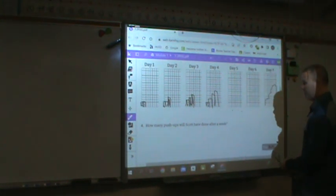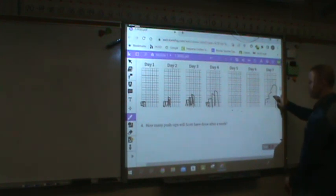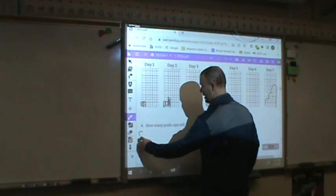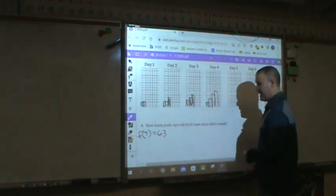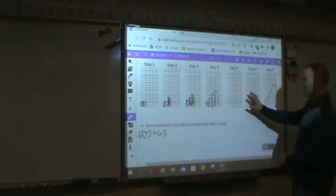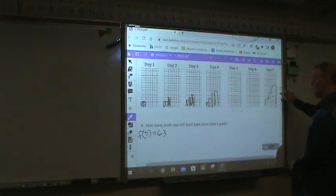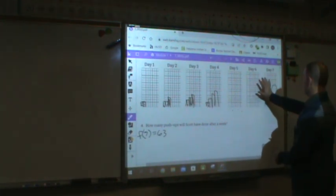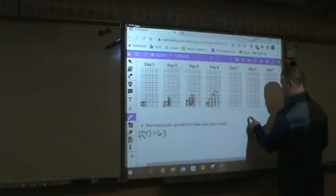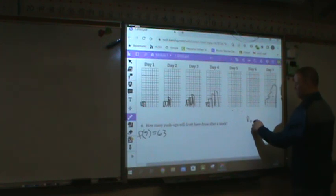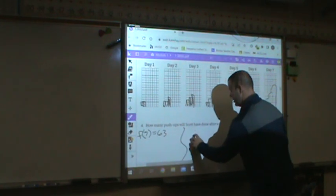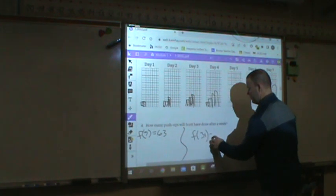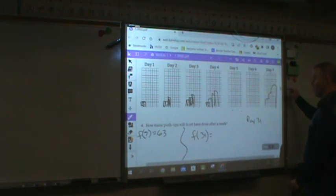Well, it wants to know how many push-ups Scott will do after a week. Someone counted the total number of boxes over here, and they got 63. So F of seven was equal to 63. But they counted, which is not so bad if we're dealing with a seven-day model, but what if we continue this all the way until we get to day 31? I'm not counting. Or what is F of 31? What does that equal? I'm not counting all those blocks.